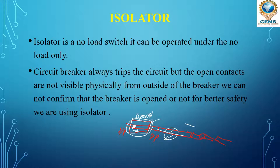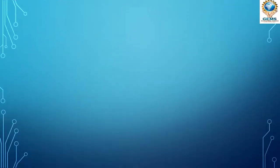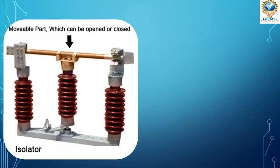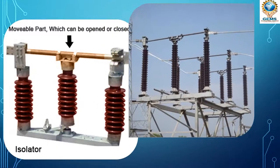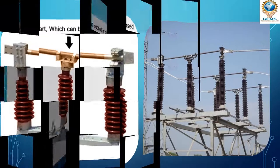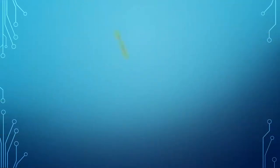When we switch off the isolator, it opens physically and we can see easily whether the circuit is open or not. Here you can see the diagram of the isolator. We will also see different types of isolators and how they work.